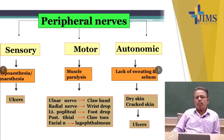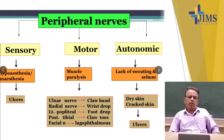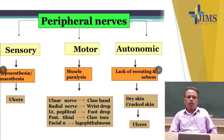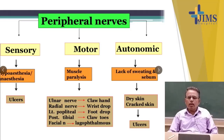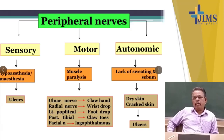Lagophthalmos means the patient cannot close the eye. This causes dryness of the eyes, reduced visual acuity, and blindness. If the autonomic nerve is involved, there is lack of sweating and sebum production, so the skin will be dry and cracked, leading to infection and ulcers.